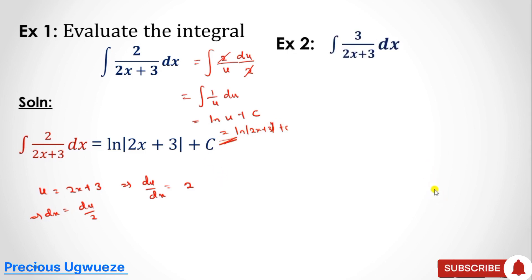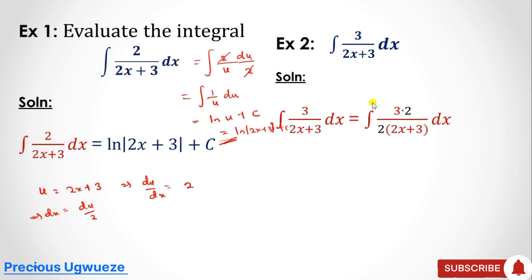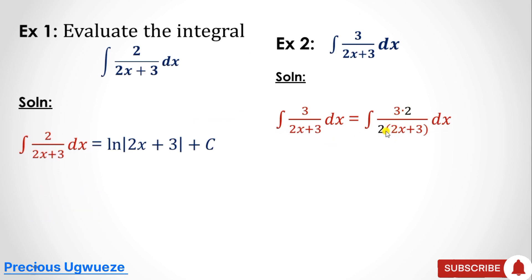The next example: look at this carefully. The derivative of the denominator is 2, which is not exactly equal to 3 in the numerator, but we can manipulate it. Since we want 2 in the numerator, we multiply the numerator by 2, and to avoid changing the function we divide by 2 as well, so we can cancel out the 2s and return to what we were given.